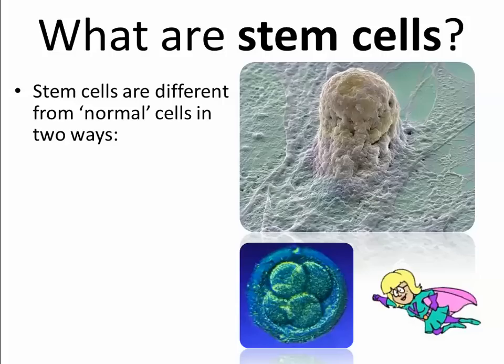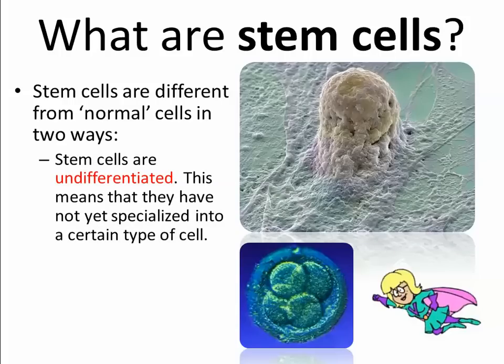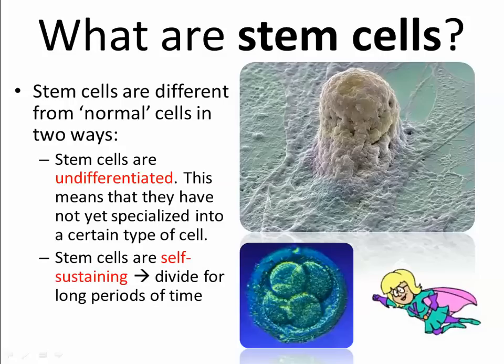All that stuff starts developing later, so eventually those cells have to specialize and turn into specific types of cells. But in the beginning, stem cells are different from the regular cells we see in our body now because of two things. They are undifferentiated, which means they have not turned into anything specific — they have not specialized yet into a certain type of cell.